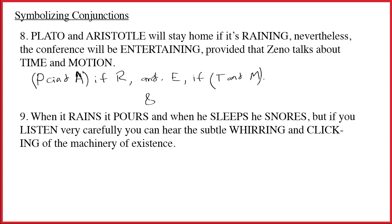The conference will be entertaining provided that Zeno talks about time and motion. So this and in the middle is just a dramatic pause separating two completely different sentences. And that's always great news because now we have a project on this side and we have another project on this side. So, how do we symbolize P and A if R? Well, that should be easy. What follows if is the antecedent. So R arrow P ampersand A. And then on the back side, E if T and M. Well, what follows if is the antecedent. T and M arrow E. Am I done at this point? No, I'm definitely not.